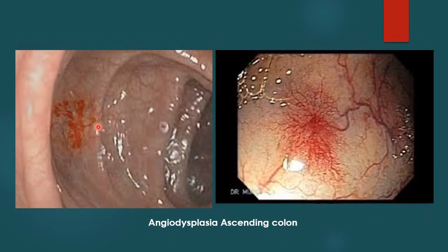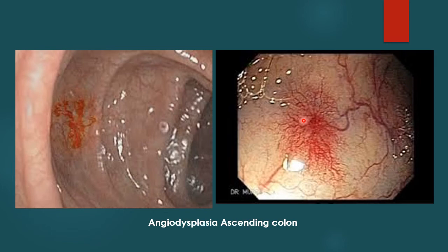These are pictures of angiodysplasia, which are venous or capillary ectasias in the wall of the large intestine. Here there is a small angiodysplasia, and another shows a much larger and more complicated angiodysplasia. This occurs commonly in the right side of the colon, in the cecum and especially the ascending colon, and is prone to bleeding due to erosion within the lumen.